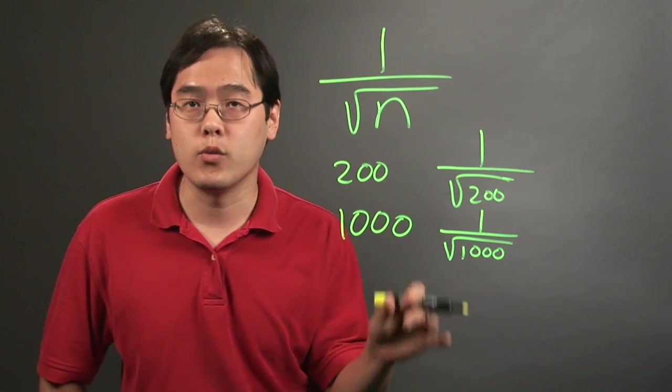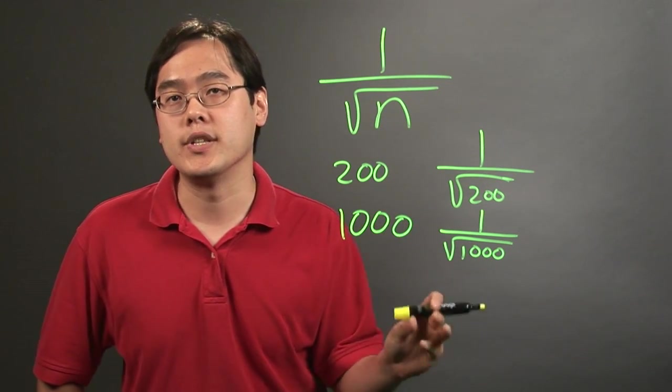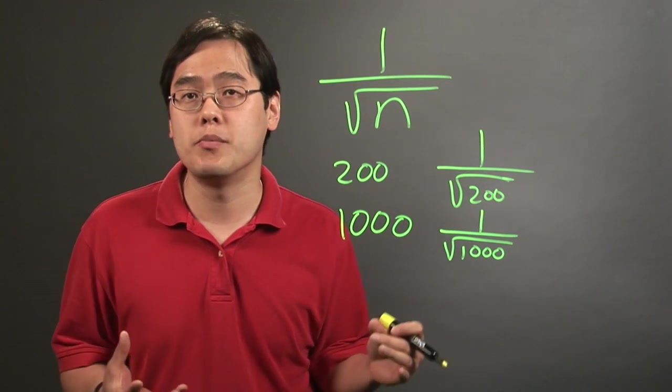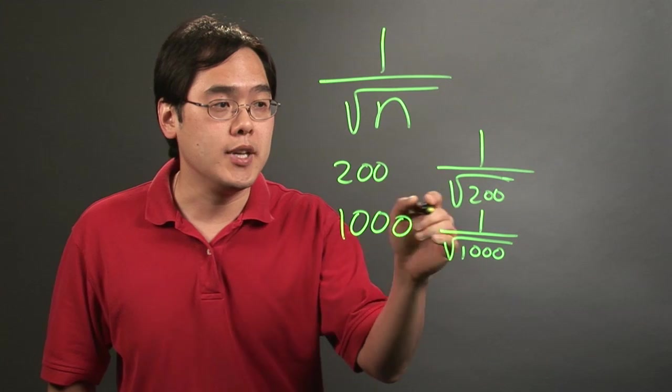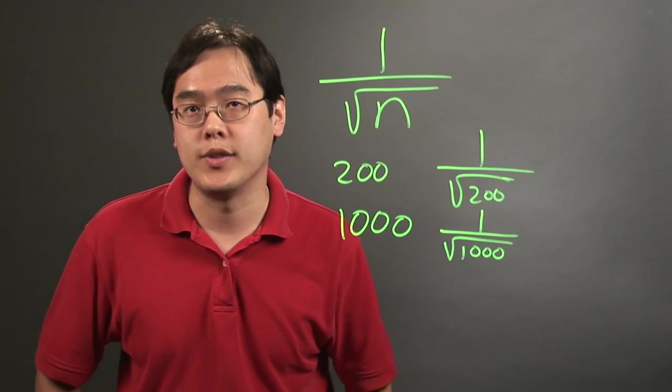So what you want to look for here when it comes to the importance of the margin of error is the smaller the margin of error, the more accurate the survey is, because the larger the margin of error, then that means there's more potential for the statistics to be a little bit more out there.